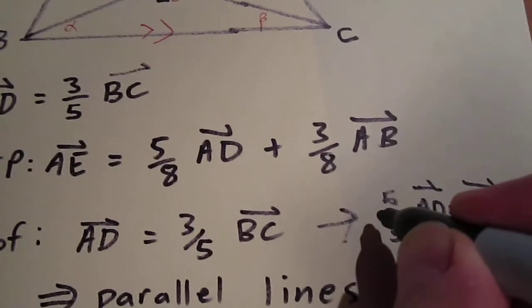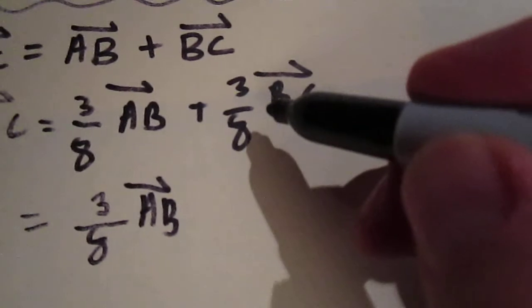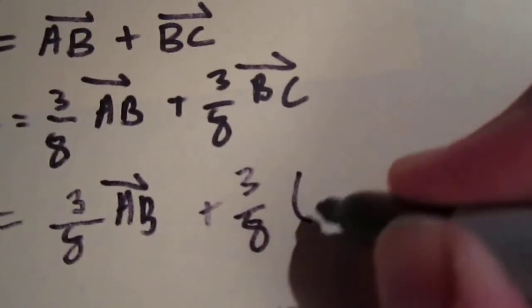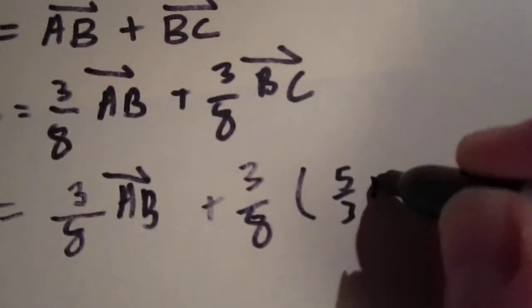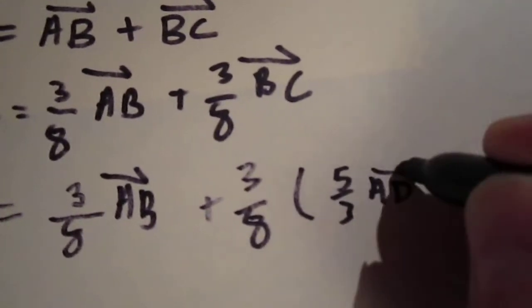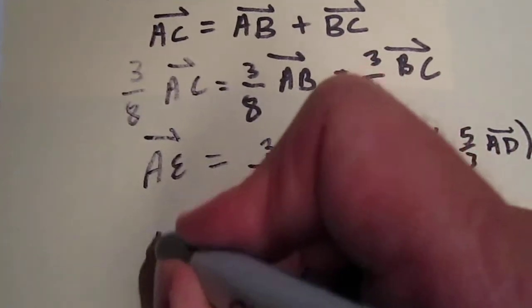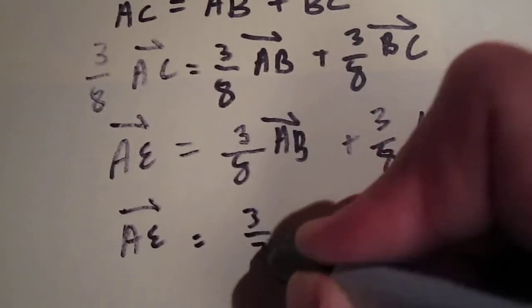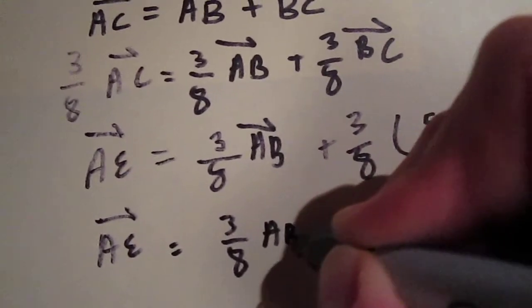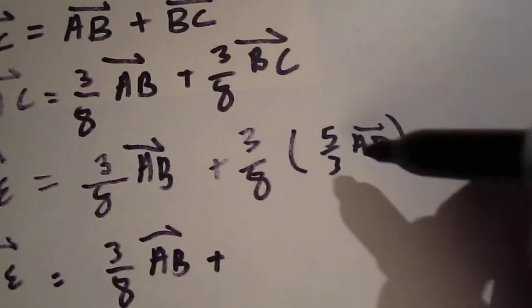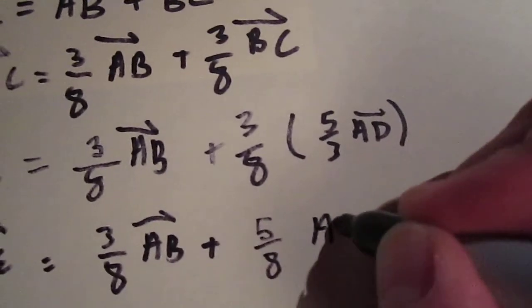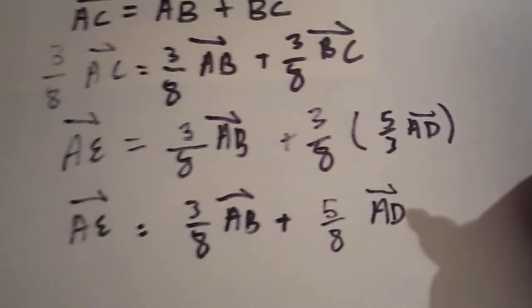And so, now, we can take this statement and plug it in back here. 3 eighths of BC is the same as 3 eighths of 5 thirds of AD. And when you add all these together, what you get is AE equaling 3 eighths of AB plus 3 eighths times 5 thirds is also known as 5 eighths AD. And we're done.